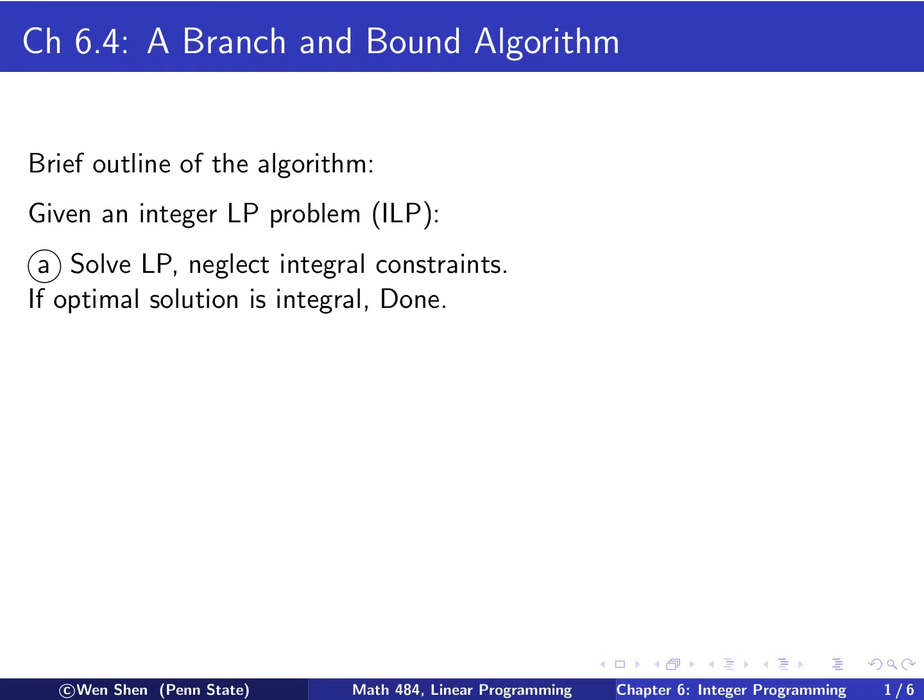So here is a brief outline. It takes a couple of steps. So now we are given an integer linear programming problem, we call it ILP. So step A, the first step, we would solve the linear programming problem neglecting the integral constraint. If by chance the optimal solution is integral, then we're done.